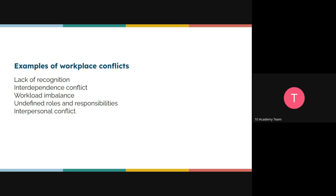Undefined roles and responsibilities are another source of workplace conflict. When roles aren't clearly defined or there are overlapping responsibilities, people don't know who to blame when things go wrong or who gets credit when things go right. Finally, interpersonal conflict occurs when a personal relationship issue — like bad history outside work — bleeds into the professional environment.